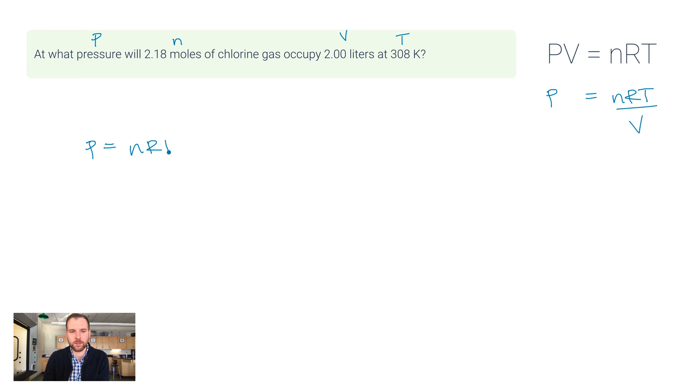So let's plug in what we have then. P is nRT over V. I've got 2.18 moles for n. For R I have 0.0821. Temperature is 308 kelvins, and then the volume I'm dividing by is 2.00.